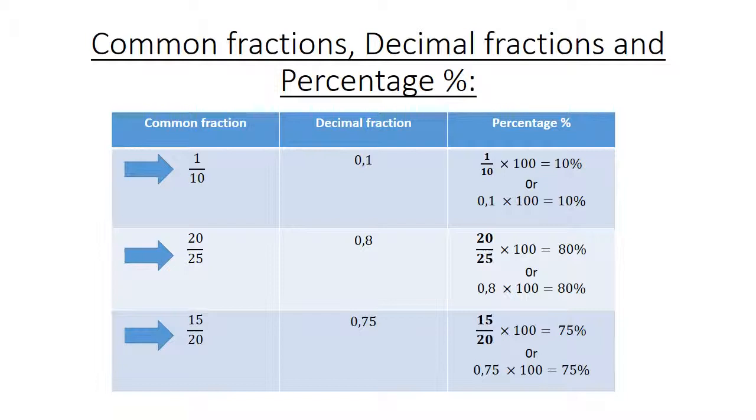15 over 20. The decimal fraction is 0,75. Again to work out your percentage, 15 over 20 times 100 equals 75%. Or 0,75 times 100 equals 75%.